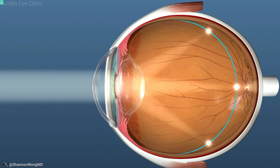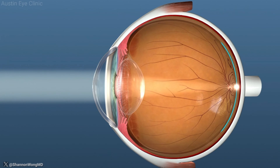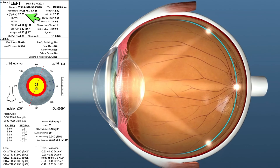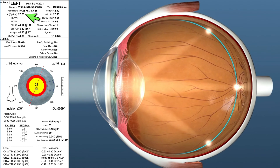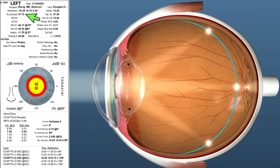The most likely cause is that this patient has a long axial length of 27.73 millimeters, and thus likely has a capsular bag diameter that is larger than average, which has allowed the IOL to rotate inside the capsular bag post-operatively.